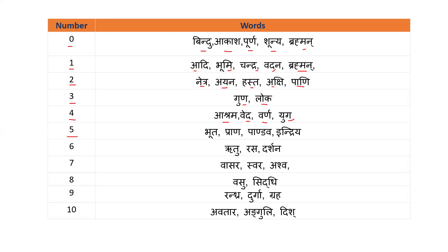For number 5, they used Pancha Bhutas, Pancha Pranas, Pancha Pandavas, Pancha Indriyas. For number 6, they used 6 Rutus, Shad Rasa, and Shad Darshana — 6 Darshanas. For number 7, Vasara meaning days — 7 days, Saptaswara meaning 7 musical notes, and Saptashwa meaning 7 horses.